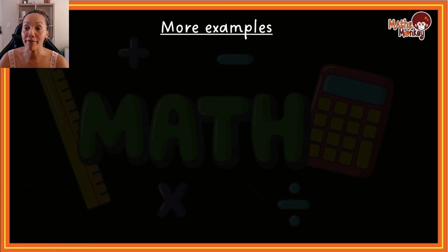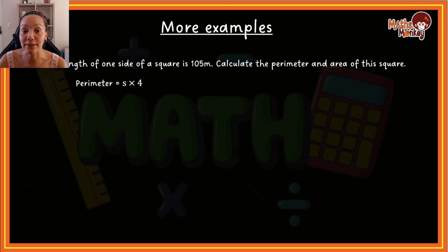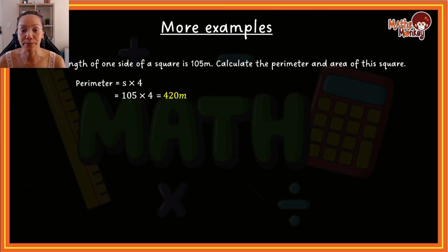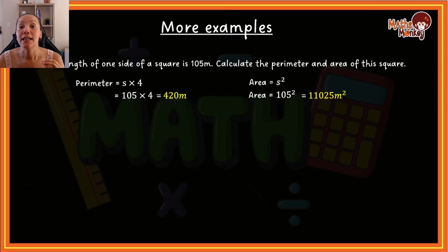Let's look at some more advanced questions. The first one says: the length of one side of a square is 105 meters. Calculate the perimeter and the area. They only need to give you one side because all sides of a square are equal. For the perimeter: 105 multiplied by four equals 420 meters. For the area: side to the power of two, so 105 squared equals 11,025 meters squared. Remember — perimeter is all outside lengths added, area is side to the power of two.